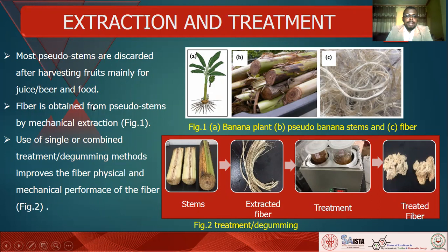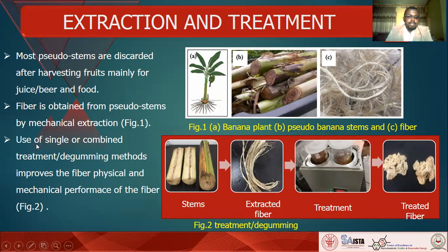Efforts have been made by many researchers to extract and treat the fiber. Most commonly, mechanical extraction is used, and the fiber is obtained from the pseudo-stems. When we treat the fiber, we get a final product as soft fiber which can be used for different applications. This can be achieved by single or combined treatment or processing methods which improve the fiber's physical and mechanical performance.